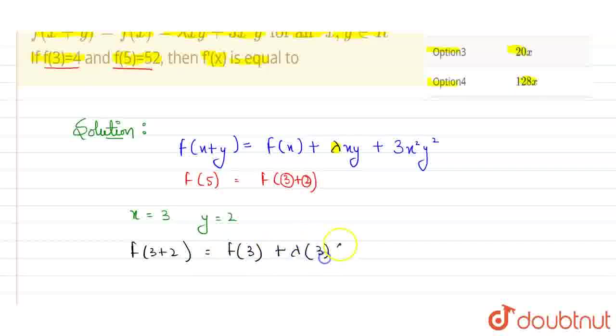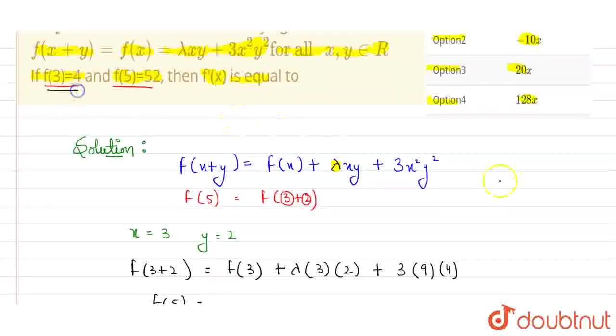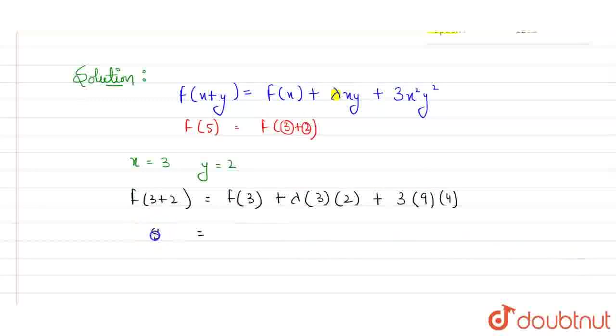3 plus 2 will be equal to f of 3 plus lambda, here x is 3 and y is 2, plus 3 x square y square, that is 3 square will be 9 and 2 square will be 4. Now, f of 5 and f of 3 is given to us in the equation, look in the equation, it is equals to 4. And f of 5 is equals to 52. So, here I'll get 52 is equals to f of 3 was equals to 4 plus lambda 6 plus, here it will be equals to 108.